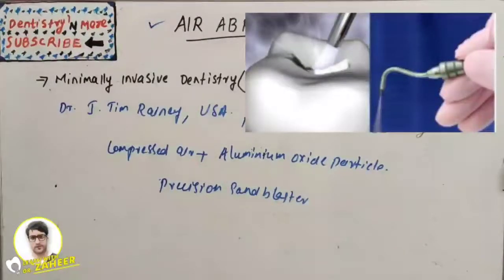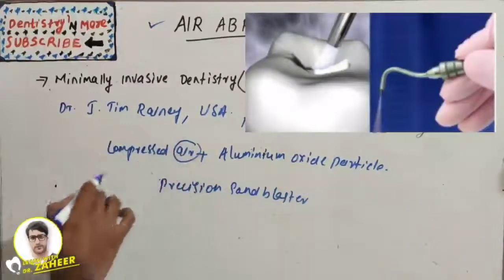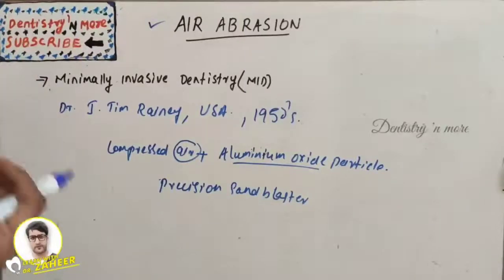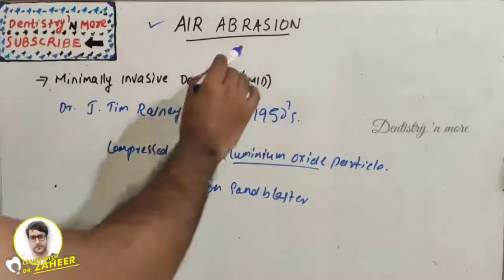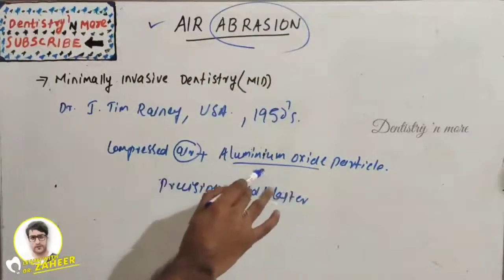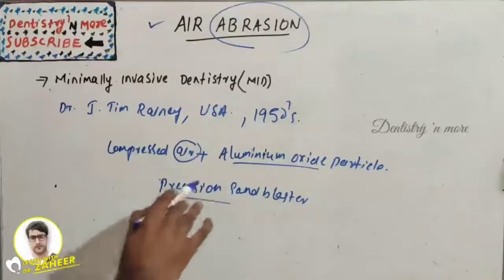We have learned about tooth abrasion and mechanical abrasion and abrasive particles. Something which erodes tooth is known as abrasive. Here the aluminum oxide through compressed air with such heavy force does the job.